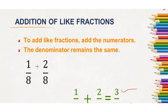Out of 8 pieces, 1 piece is eaten by you. Again, the same 8 pieces — 2 pieces are eaten by your friend, which means a total of 3 pieces have been eaten out of 8 pieces. This is how we add like fractions.